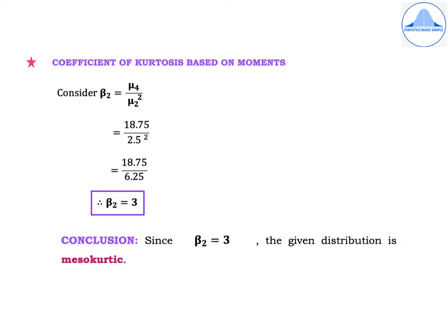Next, we will find the coefficient of kurtosis based on moments. The formula is β2 = μ4 / μ2² = 18.75 / 2.5² = 18.75 / 6.25 = 3. Since β2 is exactly 3, the given distribution is mesocurtic.